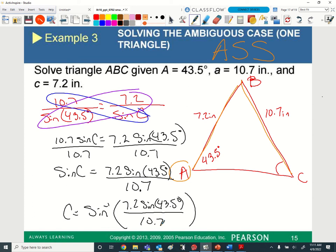What's happening to my sine C? It's multiplying. And so how do I undo that multiplication? I'm going to divide both sides by 10.7. So sine of C is equal to 7.2 times the sine of 43.5 degrees divided by 10.7. Now that gives me sine C by itself. I've got to get C by itself. So what am I going to do? If I'm looking for the angle, I do the inverse.